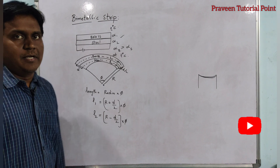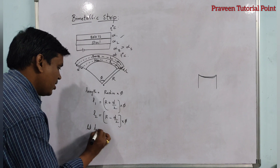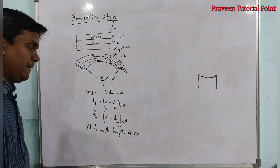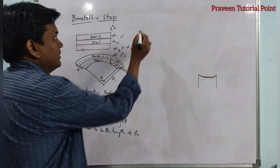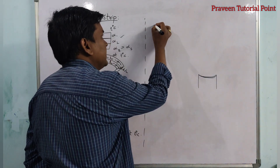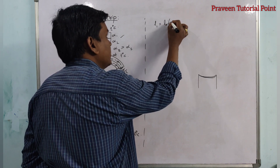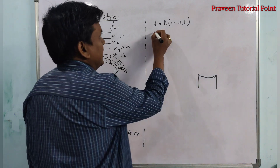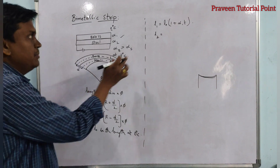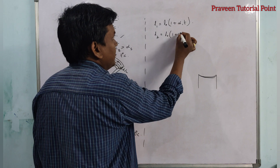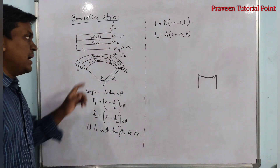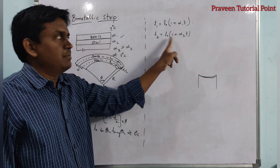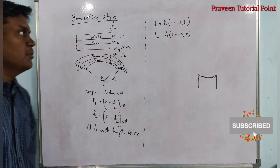Let l0 be the length of both strips at 0 degrees Celsius. From the coefficient of linear expansion formula: l1 equals l0 into (1 plus alpha 1 t) for the brass strip, where alpha 1 is the coefficient of linear expansion of brass. And l2 equals l0 into (1 plus alpha 2 t) for the steel strip, where alpha 2 is the coefficient of linear expansion of steel.